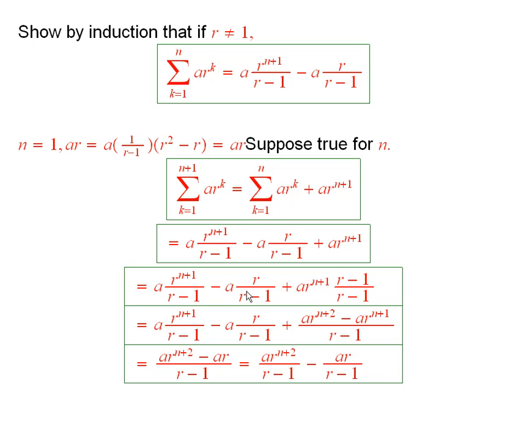We have these terms here. And then, this term is equal to itself times r minus 1 over r minus 1. Then, I can multiply this through. And now, I just have to add these up. When I add them up,